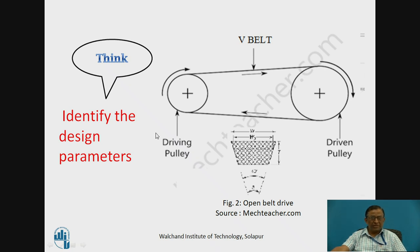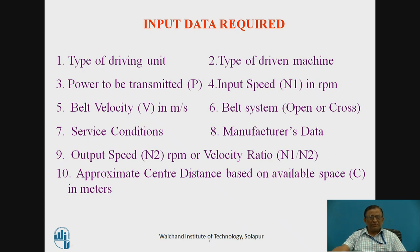Students, pause for a while and identify the design parameters. For designing the V-Belt, we require input data consisting of: type of driving unit, type of driven machine, power to be transmitted, input speed, belt velocity, belt system (either open or cross), service conditions, manufacturer's data available as standard charts, output speed, and approximate center distance. These are the data we collect to start designing.